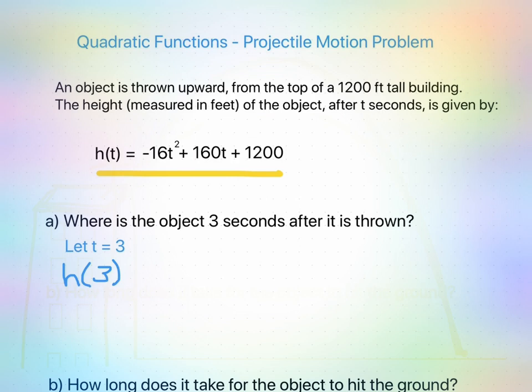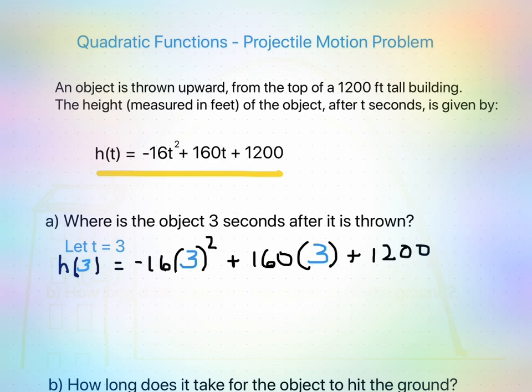Here what I've done is I've written the function in black, but everywhere I had a t, I went ahead and inserted that 3 in its place. Now we can go ahead and simplify, see what value we get when t is 3 seconds. Remember, follow your order of operations.